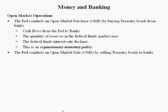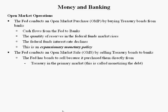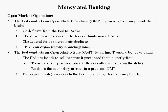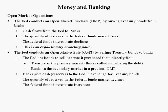The Fed conducts an open market sale by selling Treasury bonds to banks. The Fed has bonds to sell because it purchased them directly from the Treasury in the primary market — this is called monetizing the debt — or it purchased the bonds from banks in the secondary market in a previous open market purchase. Banks give cash, that is reserves, to the Fed in exchange for Treasury bonds. The quantity of reserves in the Federal Funds market declines and the Federal Funds interest rate increases. This is restrictive monetary policy.